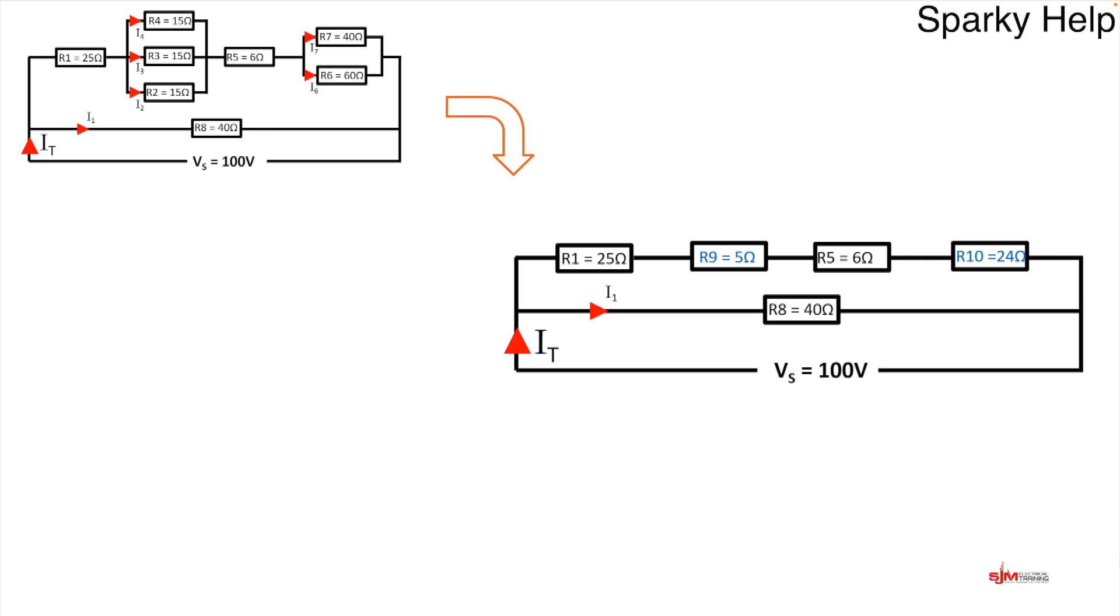What do we do now? Well let's work out the top line first of all as that's a series section. Ignore the R8, the 40 ohm, we'll ignore that for the time being and just work out all of the top. Because it's series, add them up. So if we add those up we get a total resistance on the top line of 60 ohms. And we'll call that R11.